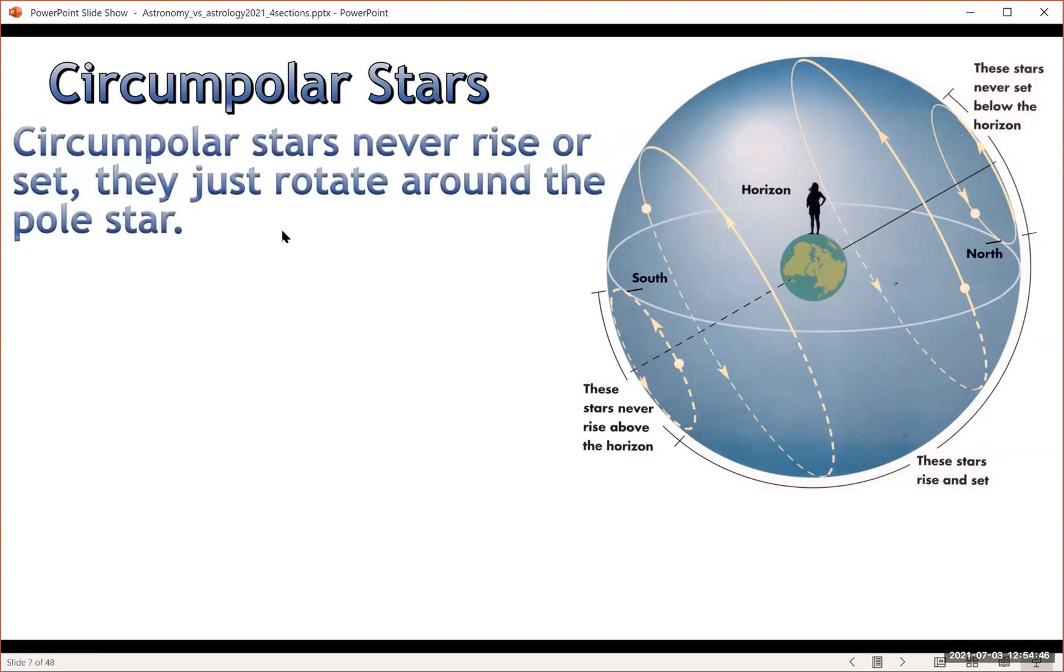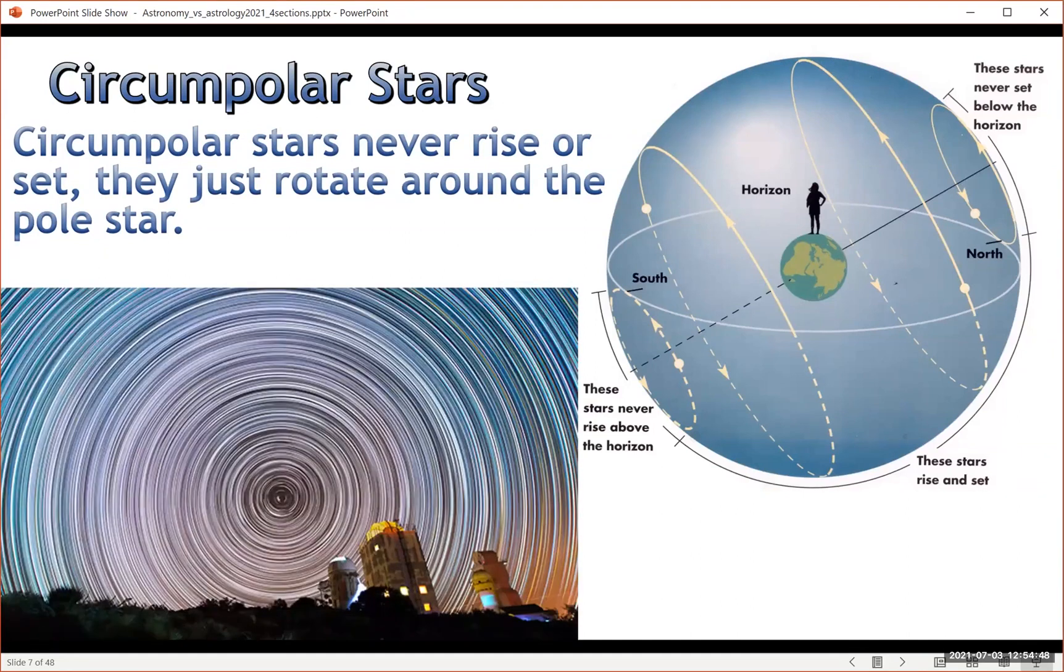So circumpolar stars never rise or set. They just rotate around the pole star. And so if you point a camera at the pole star and record it for a little while, what you'll get is what's called star trails. As the earth turns, instead of having a point for a star, it'll trace out its path across the sky. The closer to the pole star, the smaller the circle. And you can see some of these stars are setting, but these ones here are not.